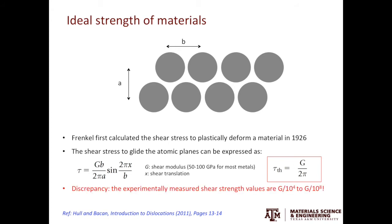However, this is not what people have observed experimentally. The experimentally measured shear strength is usually a very small fraction of the ideal shear strength. Therefore, when you plastically deform a material, it is not simply one atomic plane gliding on another — we need something called dislocations to facilitate the deformation.